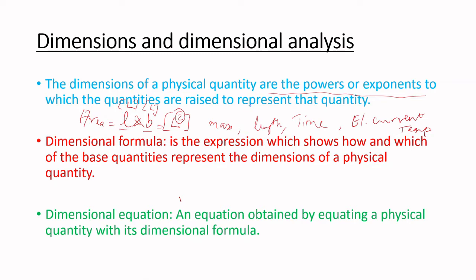The dimension of a physical quantity are the powers or exponents to which the quantities are raised to represent that quantity. Area's dimensional formula is L squared, and in that, the 2 is the dimension. Dimensional formula means the expression which shows how and which of the base quantities represent the dimension of a physical quantity.